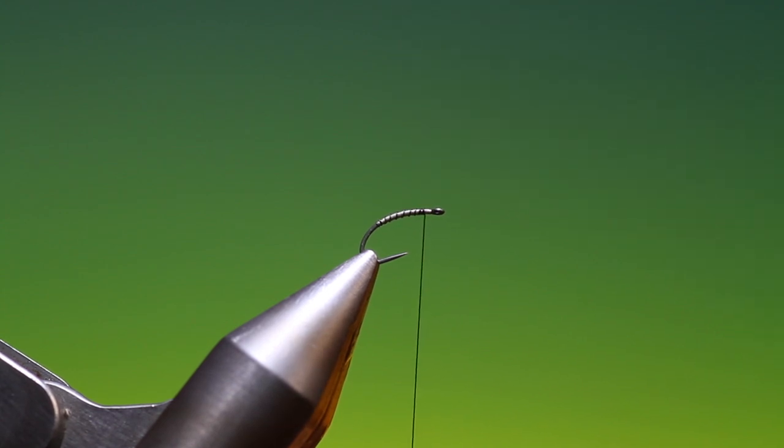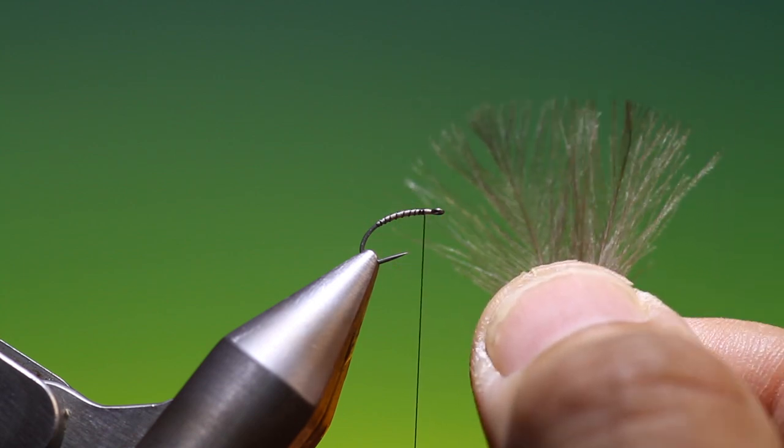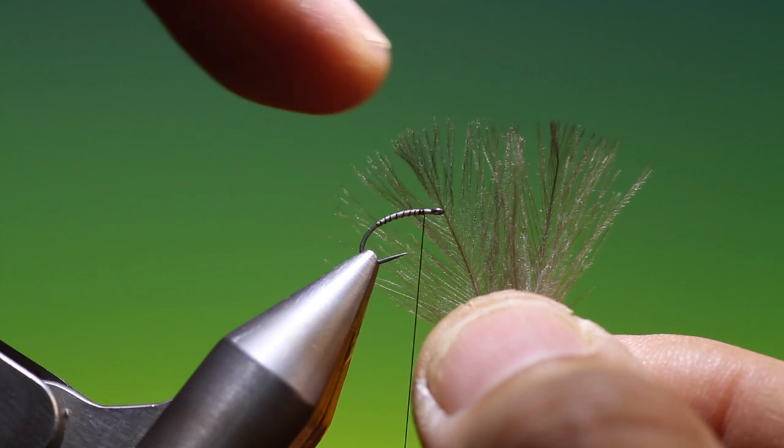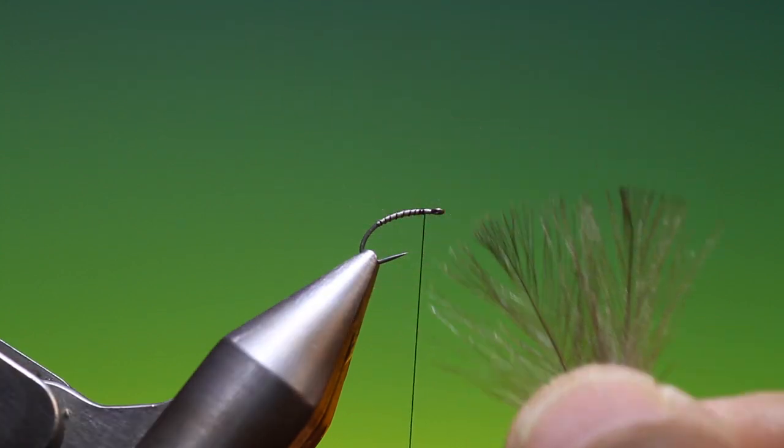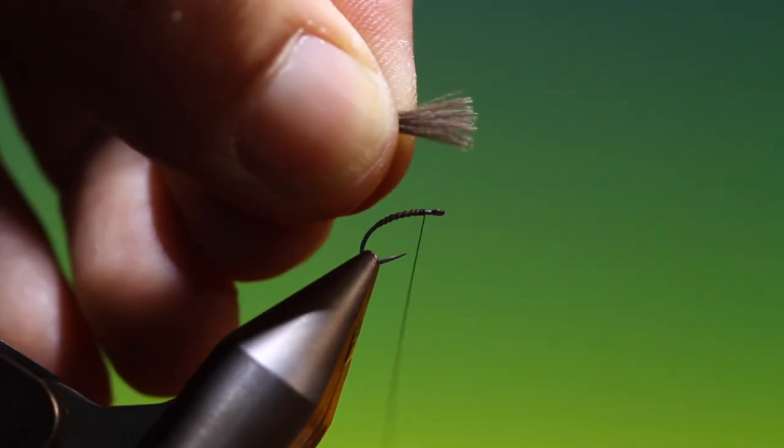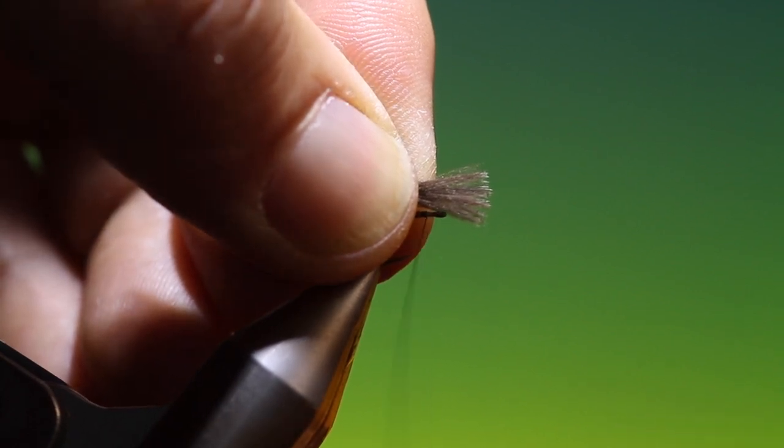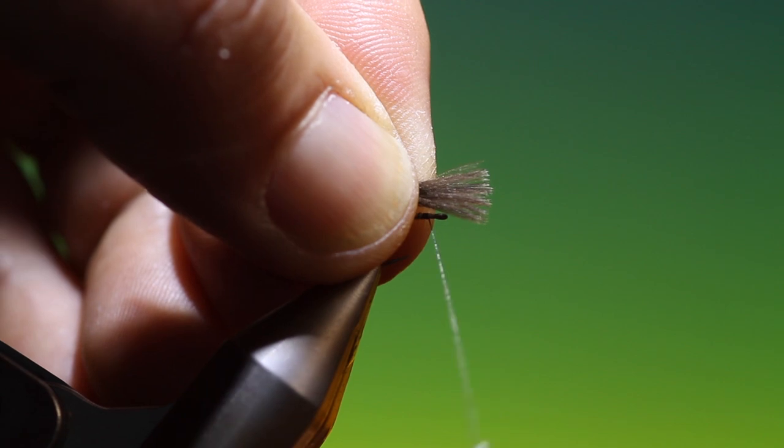Now what we need is two CDC hackles, and we want, if possible, with flat tips like this. And we just align those up like that so the tips are even and level, like so. Now we'll just spin our thread anti-clockwise again.